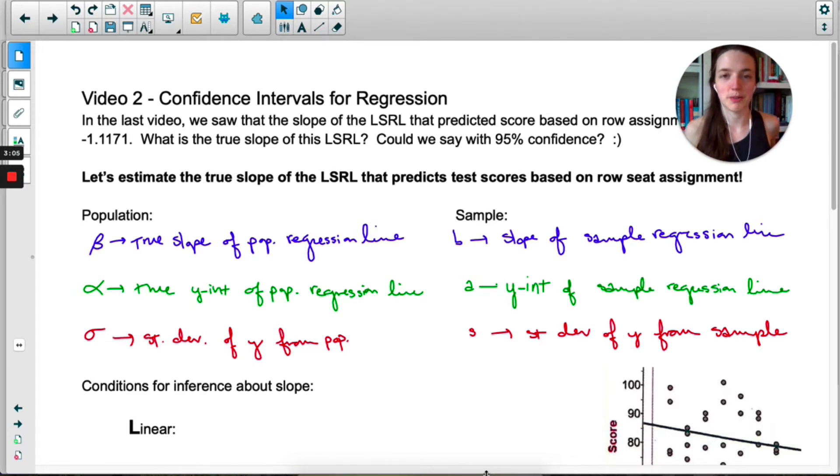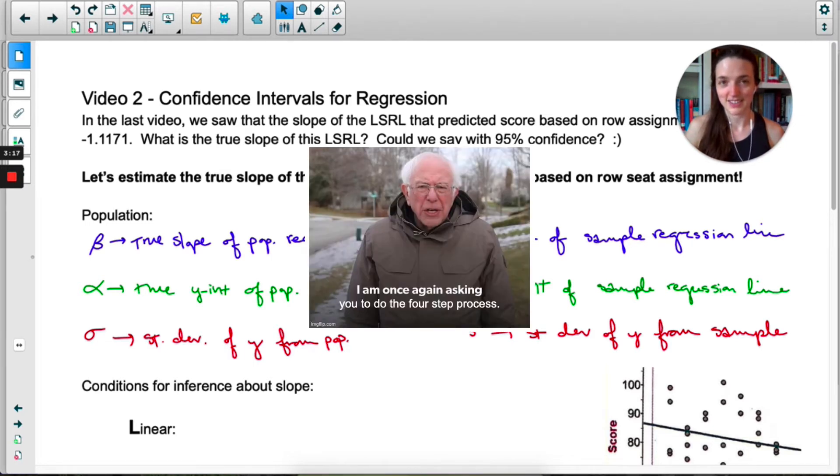As I mentioned, we're dealing with slope. Could we estimate the true slope of the regression line with 95% confidence? That's the goal. We're still going to use the state-plan-do-conclude process.